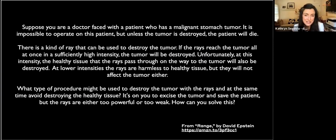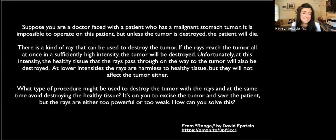Suppose you are a doctor faced with a patient who has a malignant stomach tumor. It is impossible to operate on this patient, but unless the tumor is destroyed, the patient will die. There is a kind of ray that can be used to destroy the tumor. If the rays reach the tumor all at once in a sufficiently high intensity, the tumor will be destroyed. Unfortunately, at this intensity, the healthy tissue the rays pass through on the way to the tumor will also be destroyed. At lower intensities, the rays are harmless to healthy tissue, but they will not affect the tumor either. What type of procedure might be used to destroy the tumor with the rays and at the same time avoid destroying the healthy tissue?